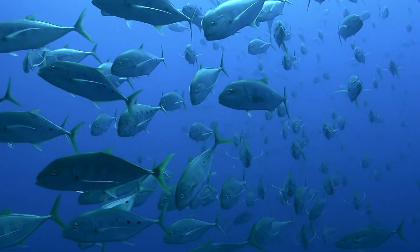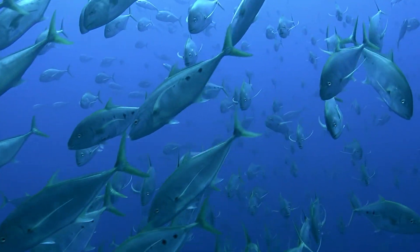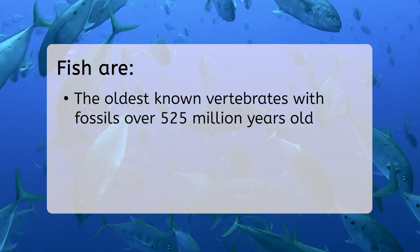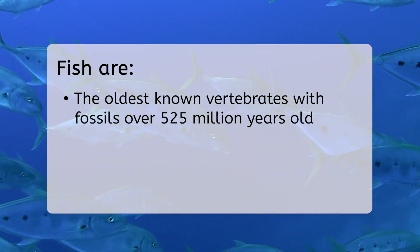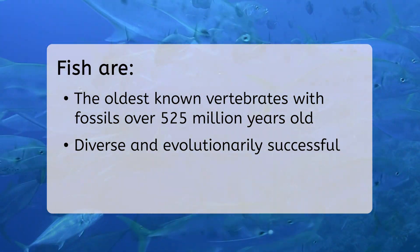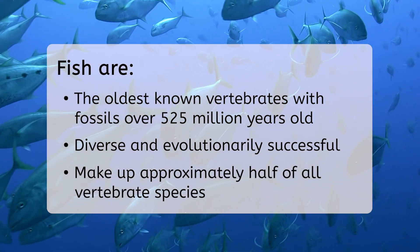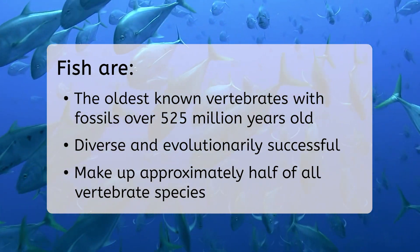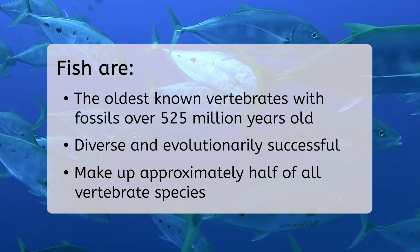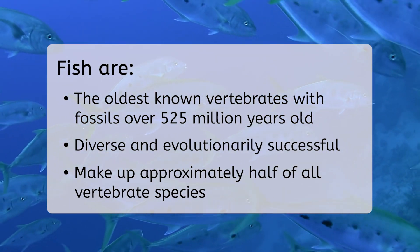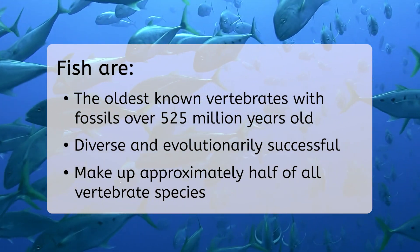What does all of this have to do with our lesson today on fish? We are going to start with fish for two reasons. They are the oldest known vertebrates — scientists have found fossils of fish dating back over 525 million years. Fish are also the most diverse and evolutionarily successful group of vertebrates; fishes make up approximately half of all vertebrate species, and scientists are discovering new species all the time. It is believed that we have only identified approximately one-third of the fish species that live in the Amazon River. In this lesson, we are going to discuss what makes fishes unique, their anatomy, and some cool adaptations that have evolved to help them survive.